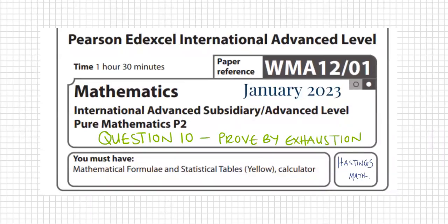This is the Pearson Edexcel IAL Mathematics Pure Math 2 from January 2023 paper. This video will be doing question 10, which is proving by exhaustion. Let's take a look.